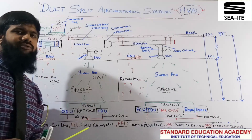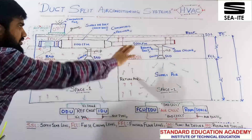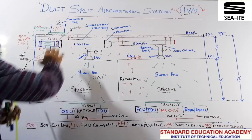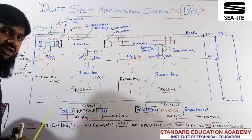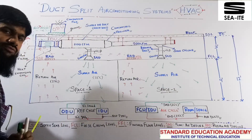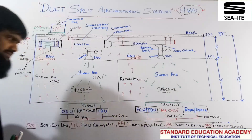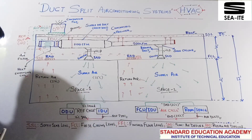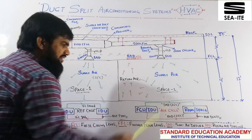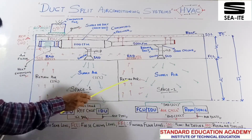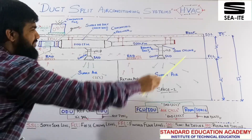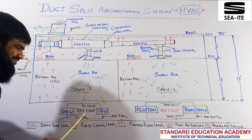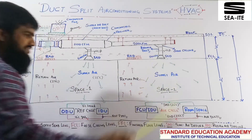Let me clarify before proceeding — to understand this duct split air conditioning system, we must have grip over two cycles. Cycles are very important here. One is refrigeration cycle, other is air cycle. This particular setup is a combo of refrigeration cycle and air cycle.